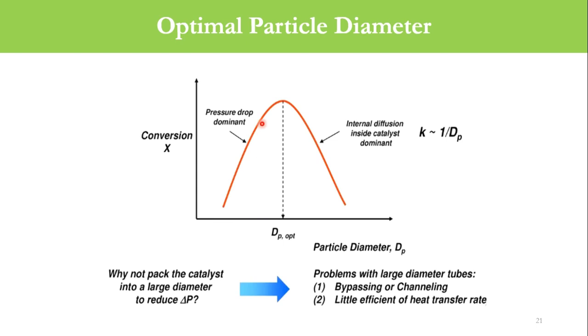The rate constant and rate of reaction start to increase, so the conversion increases. But once you move to this point, the internal diffusion inside the catalyst becomes dominant, and with increased particle diameter, the conversion starts to decrease.